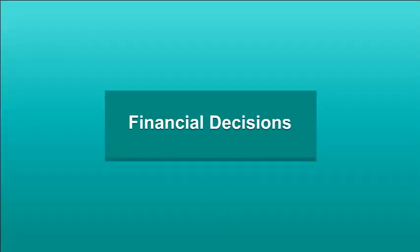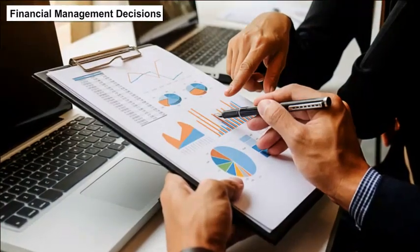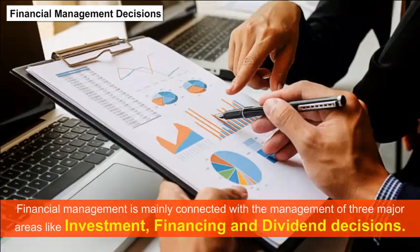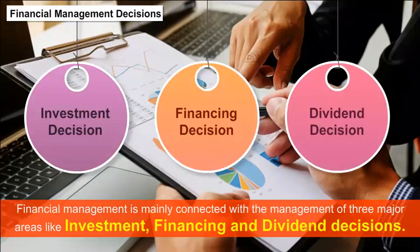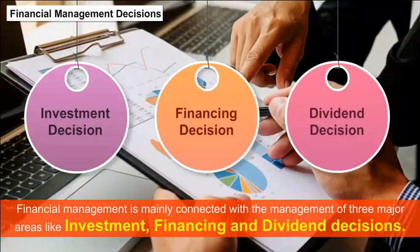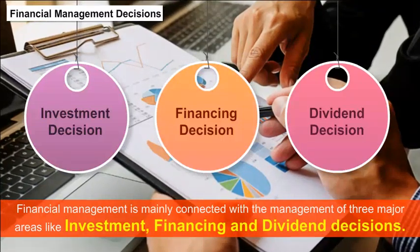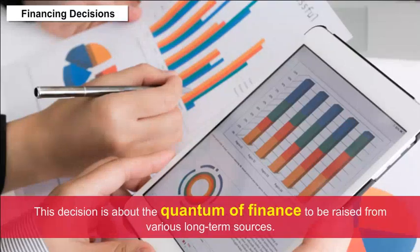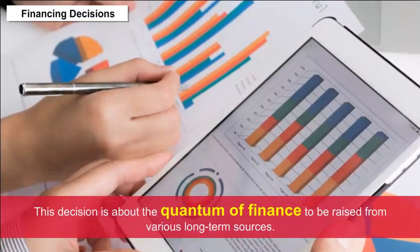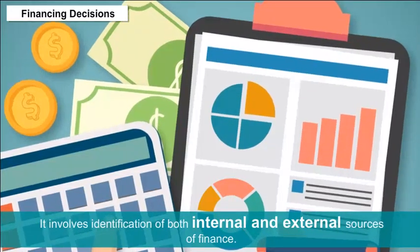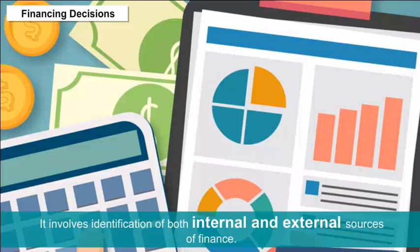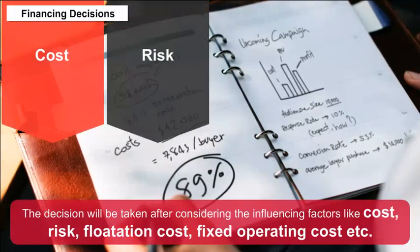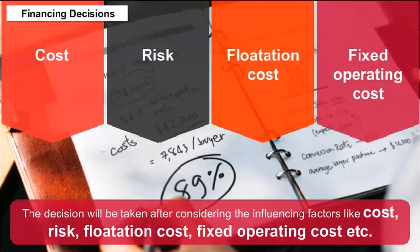Financial Management Decisions: Financial management is mainly connected with the management of three major areas — investment, financing, and dividend decisions. It analyzes these three major areas and finds solutions to these problems. Financing decisions are about the quantum of finance to be raised from various long-term sources. It involves identification of both internal and external sources of finance. The decision is taken after considering influencing factors like cost, risk, flotation cost, fixed operating cost, etc.